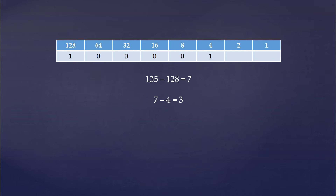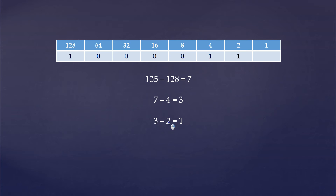With that remainder of 3 we do the same thing we did with the 7 — we go to the next place value. If it is less than or equal to 3, we put a 1 in that place and subtract that place value from 3. We put a 1 there because 2 is less than or equal to 3, and then we subtract 2 from 3, which leaves us with a remainder of 1.